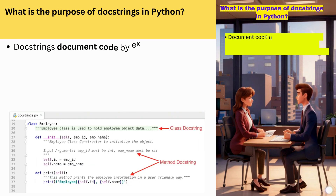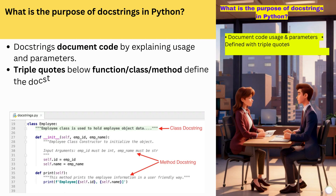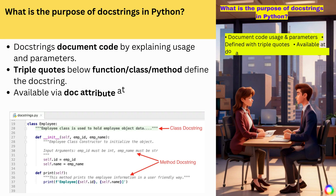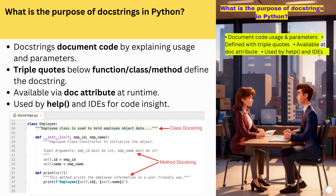What is the purpose of docstrings in Python? Docstrings document code by explaining usage and parameters. Triple quotes below a function, class, or method define the docstring. Available via the __doc__ attribute at runtime. Used by help() and IDEs for code insight.